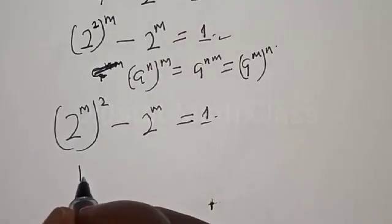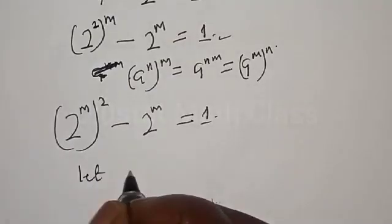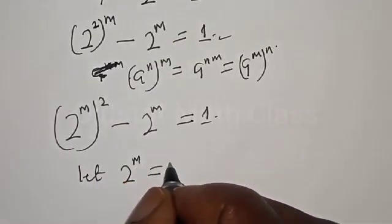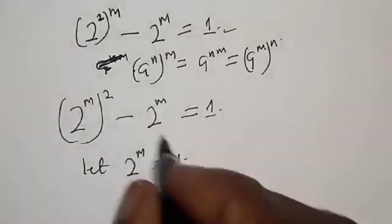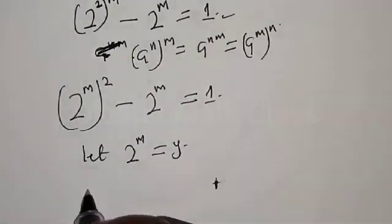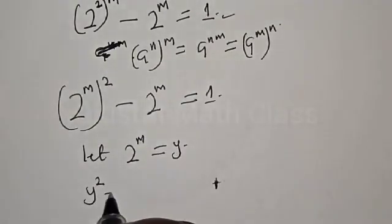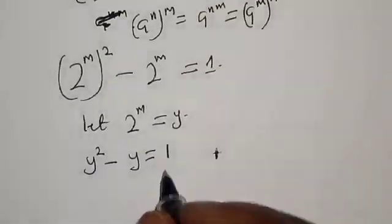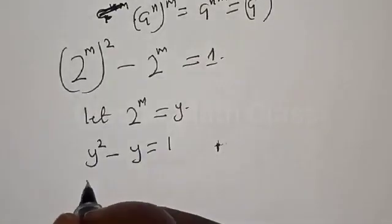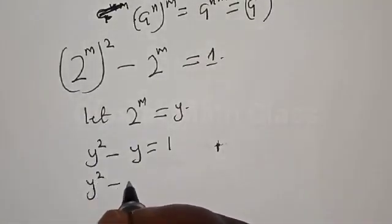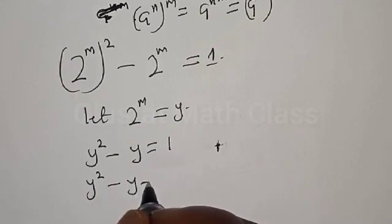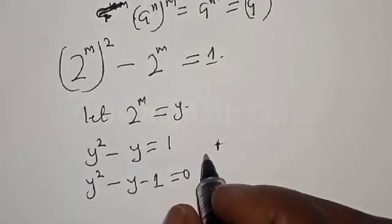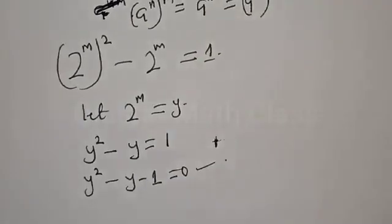Then we let 2 raised to power m equal to y. Therefore, we have y squared minus y equal to 1.